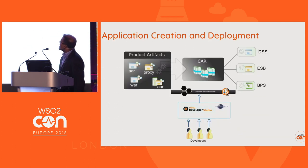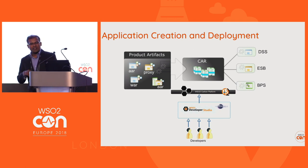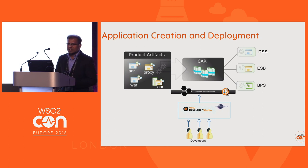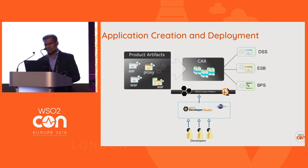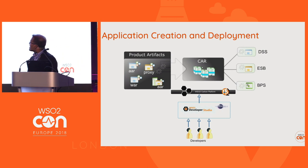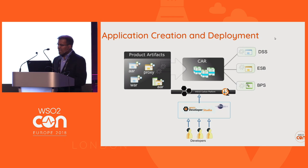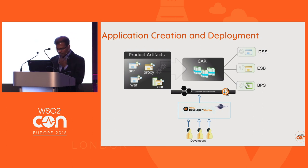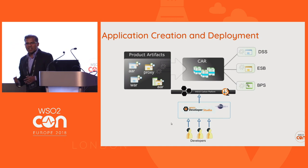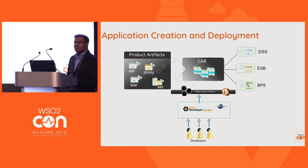The artifact packaging mechanism works as follows: within the ESB or data services, we create configurations according to the ESB or data services configuration language. Once we have these configurations — whether proxy services, APIs, or data services — we can package all artifacts into a Carbon Application Archive, which is a zip file with the .car extension. It can be deployed into the DSS runtime, ESB runtime, or business process runtime. We also have an Eclipse-based drag-and-drop visual development environment for creating these artifacts.